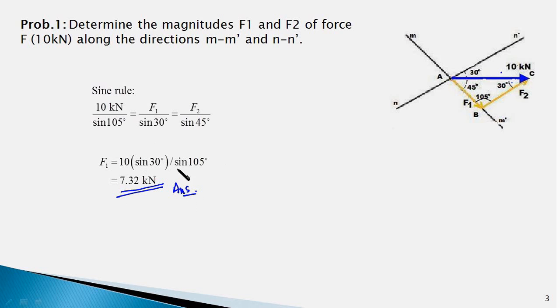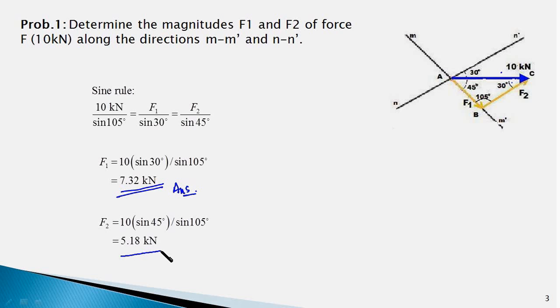Using the second equality we get the magnitude of component F2, which works out to 5.18 kN. That is our answer.